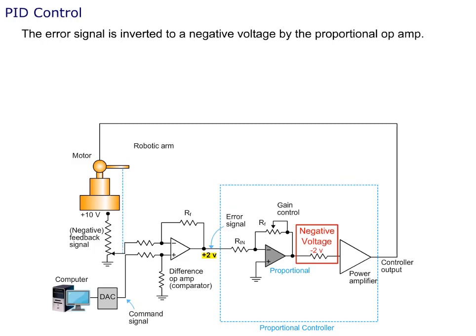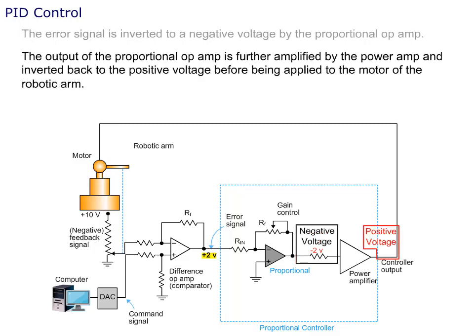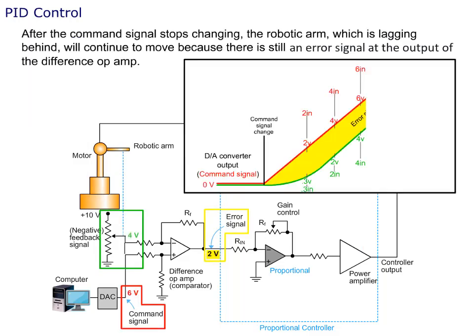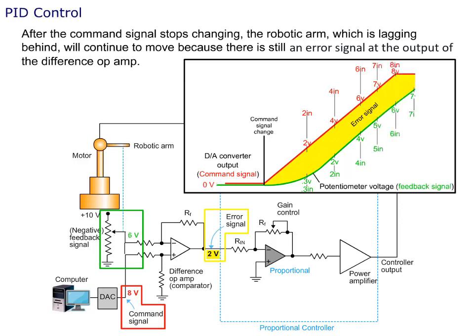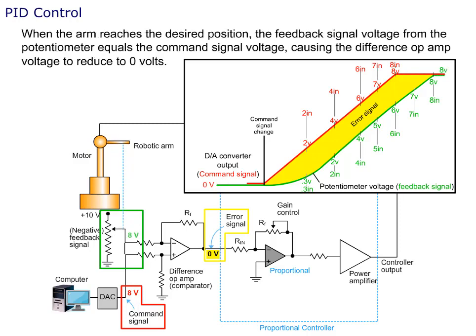The error signal is inverted to a negative voltage by the proportional op amp. The output of the proportional op amp is further amplified by the power amp and inverted back to a positive voltage before being applied to the motor of the robotic arm. After the command signal stops changing, the robotic arm, which is lagging behind, will continue to move because there is an error signal at the output of the difference op amp. When the arm reaches the desired position, the feedback signal voltage from the potentiometer equals the command signal voltage, causing the difference op amp voltage to reduce to zero volts.